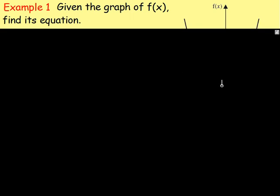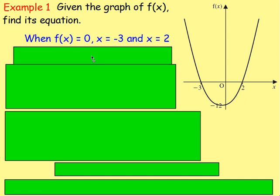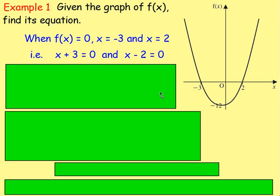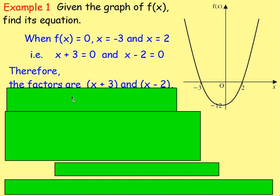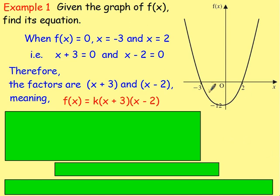Example number one. Given the graph of f of x, find its equation. We'll start off with this quadratic. We can see it's crossing the x-axis at negative 3 and 2. So f of x equals 0 — that just means it's crossing the x-axis. The y value is equal to 0 when x is negative 3 and when x is 2. Rearranging: if I add 3 to both sides, I'd have x plus 3 equals 0; or if I take 2 from both sides, I've got x minus 2 equals 0. So x plus 3 and x minus 2 are going to be factors. Therefore, the equation is f of x equals k times x plus 3, times x minus 2. The quadratic will pass through 2 and negative 3, but the steepness changes. We're given another point: 0, negative 12, so we can work out k.